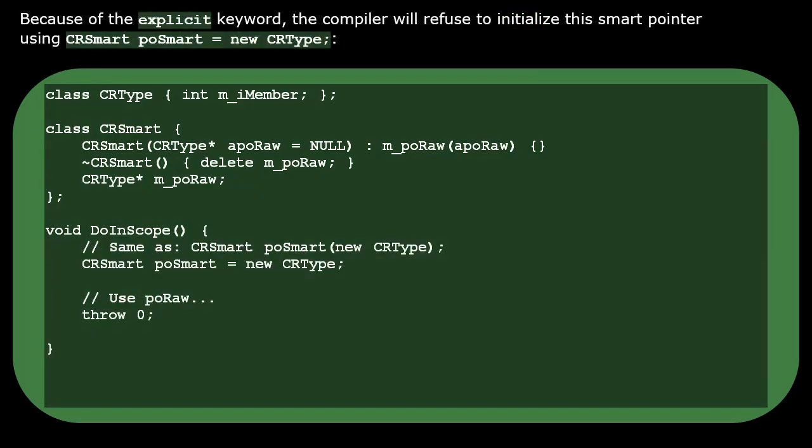As this code is currently written, we could construct this smart pointer using implicit initialization syntax from the raw allocation, but that would be potentially confusing. So we usually want the compiler to forbid this particular implicit construction, which is accomplished by the explicit keyword.